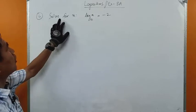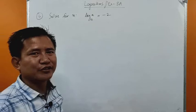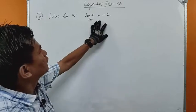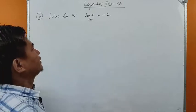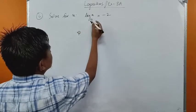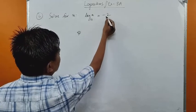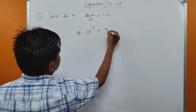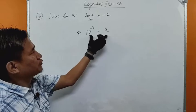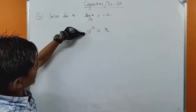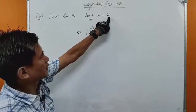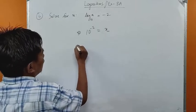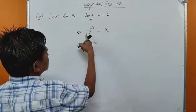Question 3: Solve for x. We are asked to find the value of x. What we do is first convert the logarithmic form into exponential form and then solve for x. For log x to base 10 equals −2: 10 is the base and −2 is the power, so 10^(−2) = x.